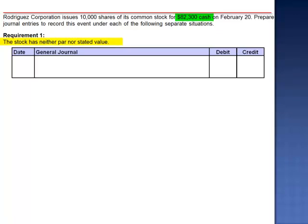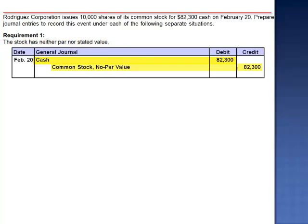If the stock has neither a par nor a stated value, the journal entry is a debit to cash to show the growth in assets, and credit the common stock no par value account for $82,300. We increase the assets and increase the paid-in capital portion of stockholders' equity.